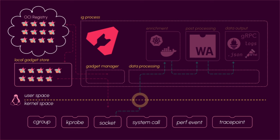There is a yellow line that delineates the user space on top and the kernel space underneath. What we'll do in the end is load those BPF programs into kernel space and pull out the data on the other side using Inspector Gadget. When you run IG run or kubectl gadget run for a particular gadget, it'll first check in the local gadget store, and if it's not there it'll go to the OCI registry and fetch it.